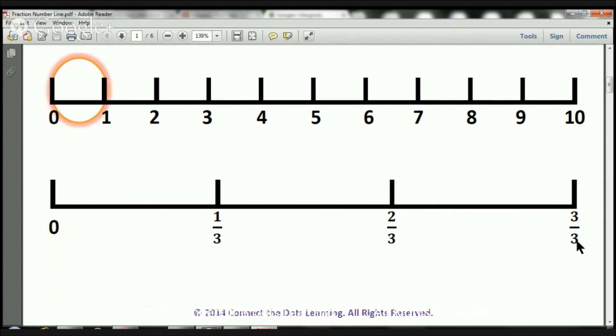three-thirds is equal to what? It's equal to one. Take a look. We started at zero, right there, and we're only looking up until number one, which is right there. All we did is we just magnified it and made it bigger. That's all we did.